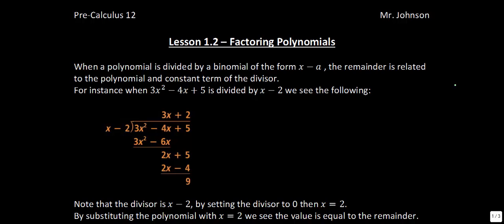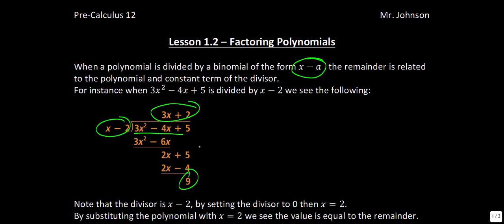If we have a polynomial and it's being divided by a binomial of the form x minus a, then there's a relationship between the remainder — in this case 9 — and our divisor. So as we can see, we took x minus 2, divided it into our polynomial, and we had our quotient and our remainder. This relationship is going to be known as the Remainder Theorem.